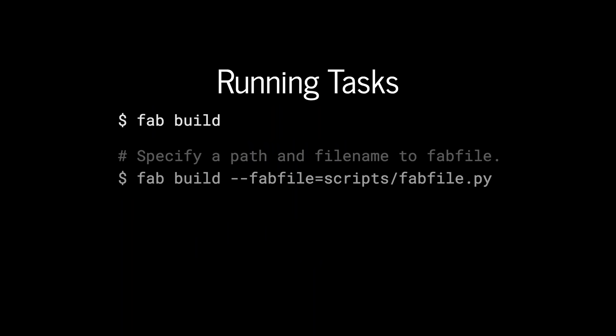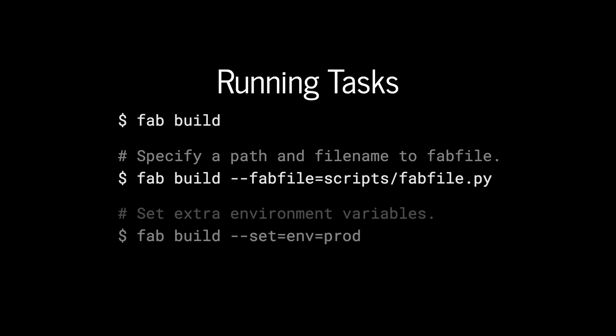Fabric will find a file called fabfile.py automatically. If it's called something else or is in a subdirectory, we can use the -f flag to tell it where the file is. We can set extra environment variables using --set and chain them together — in this case, we're using env equals prod. I use this a lot with Jenkins and continuous integration to pass through build numbers and environments into the Fabric file.